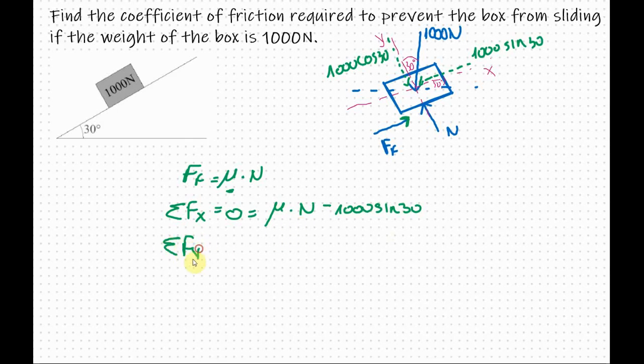So sum of the forces in the y direction equals 0. In the y direction we have normal force which is positive. And we have 1000 cosine 30 which is negative.